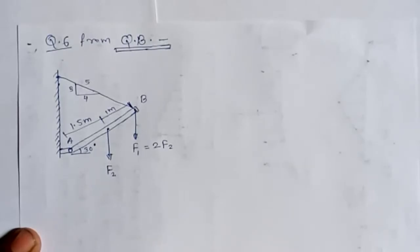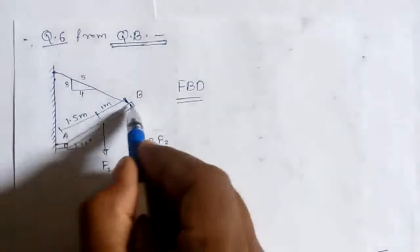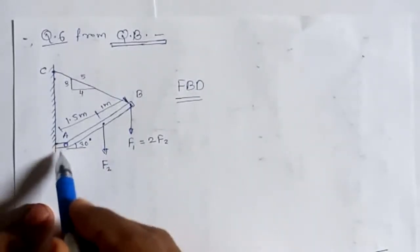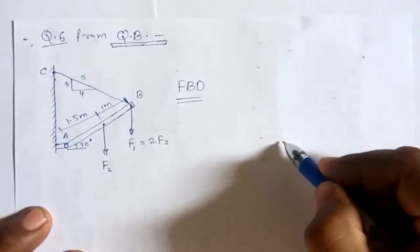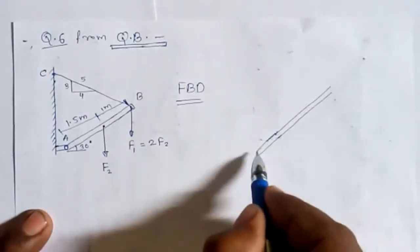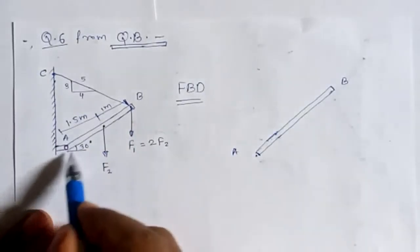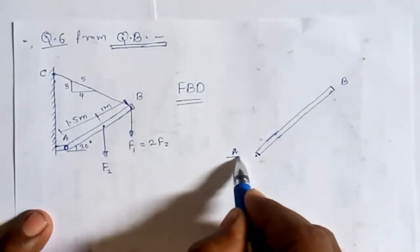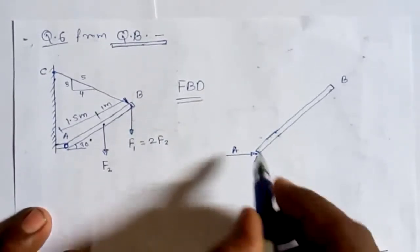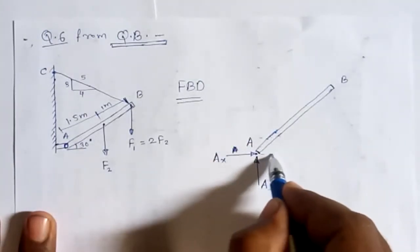Let us draw the free body diagram of boom AB. At point A there is a pin joint (hinge), which provides two reactions: horizontal reaction Ax and vertical reaction Ay. At point B, force F1 acts downward, and force F2 acts on the boom at 1.5 meters from A. The total boom length AB is 2.5 meters. The perpendicular distances from A for moment calculations use cos 30 and sin 30 of the respective distances.